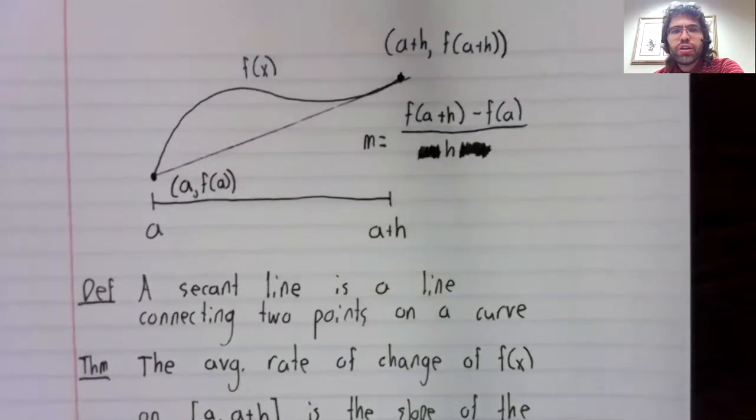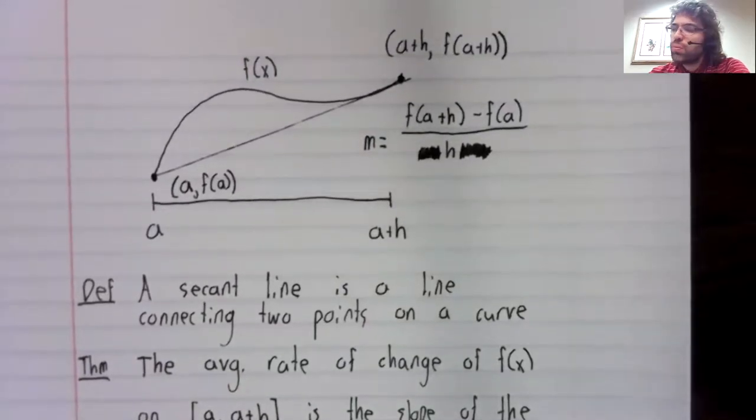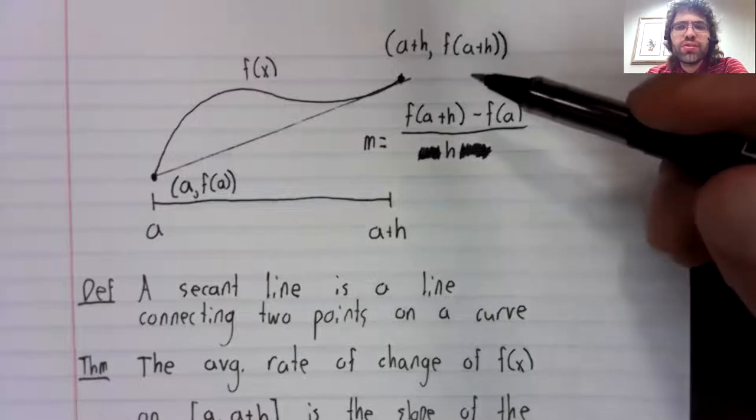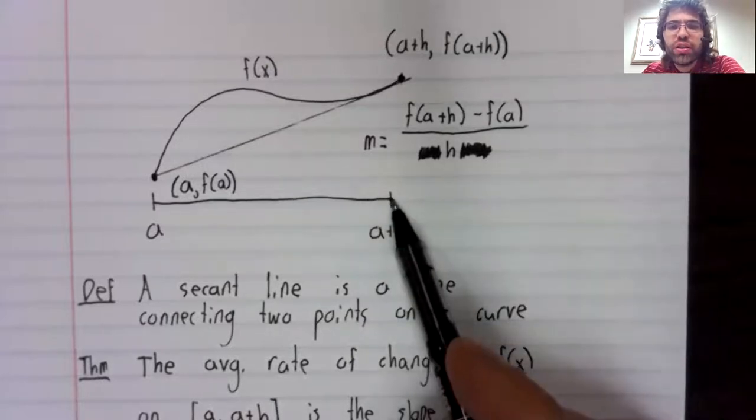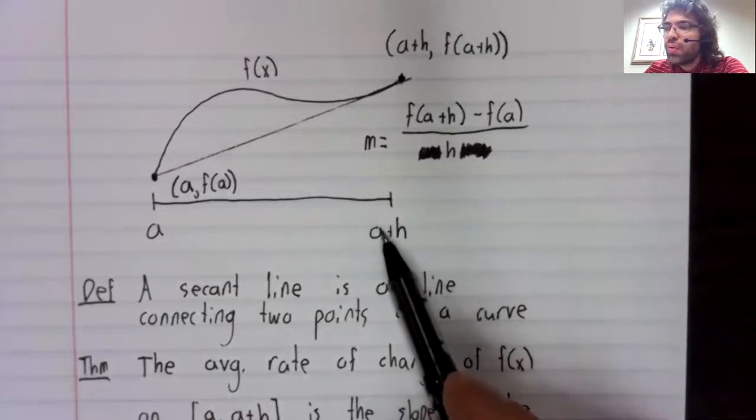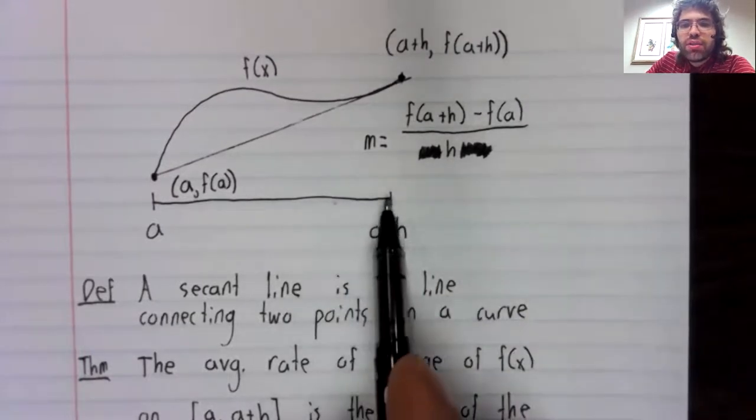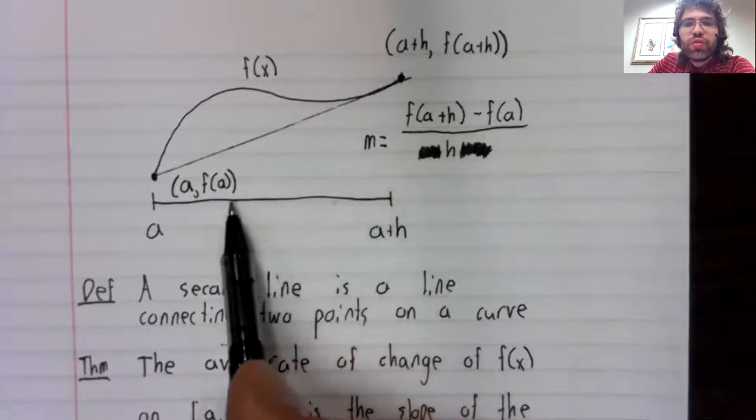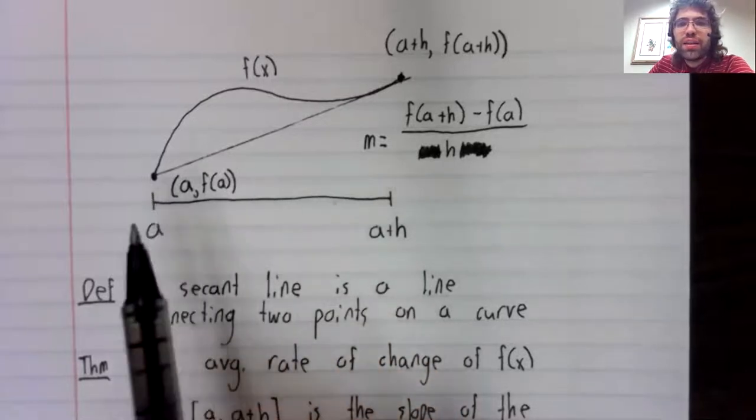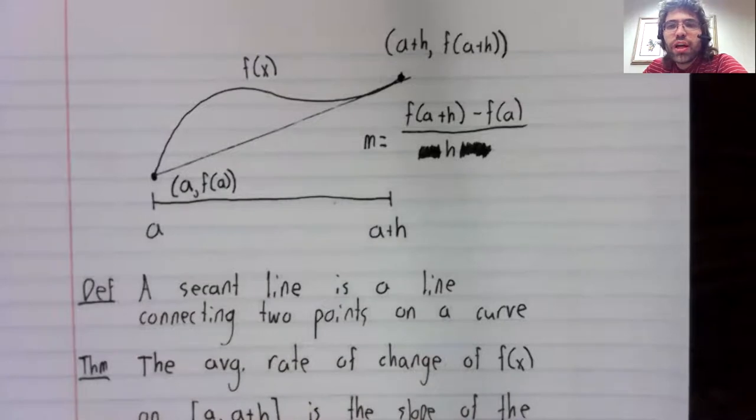Average rate of change, we know, is related to instantaneous rate of change. We let h go to zero and a plus h therefore goes to a. And we look at what happens to the average rate of change.